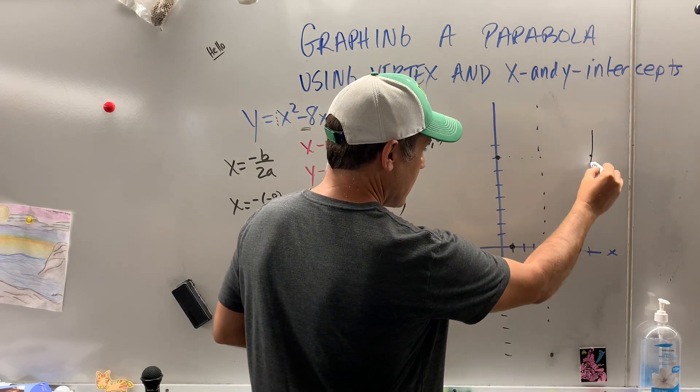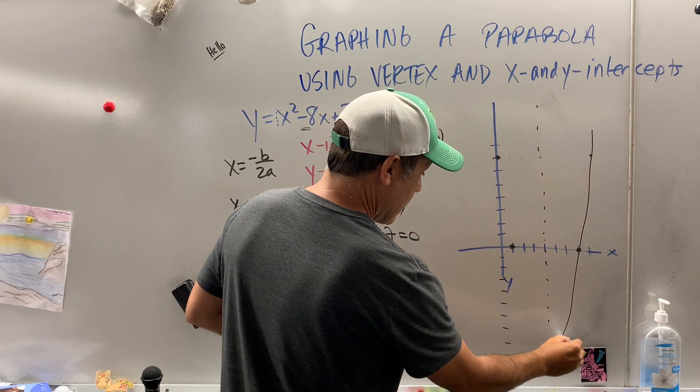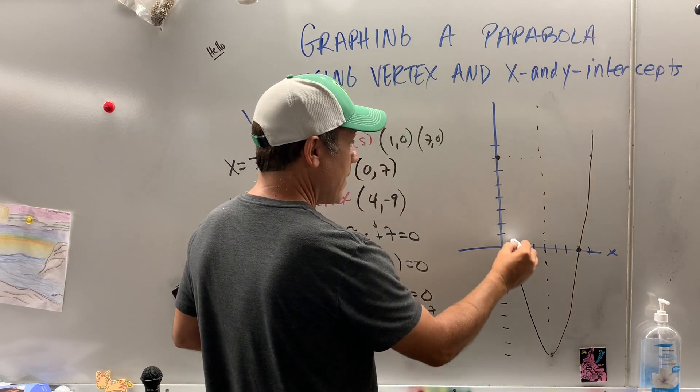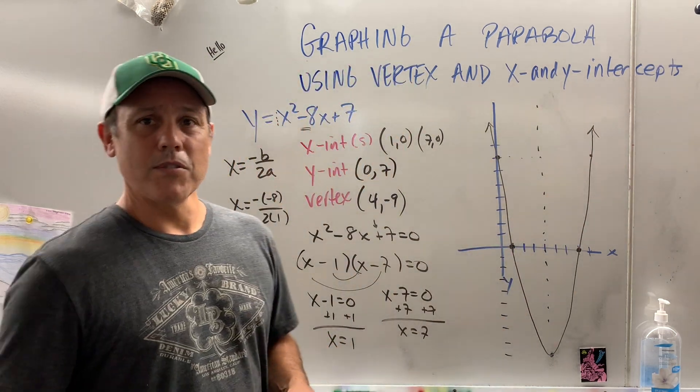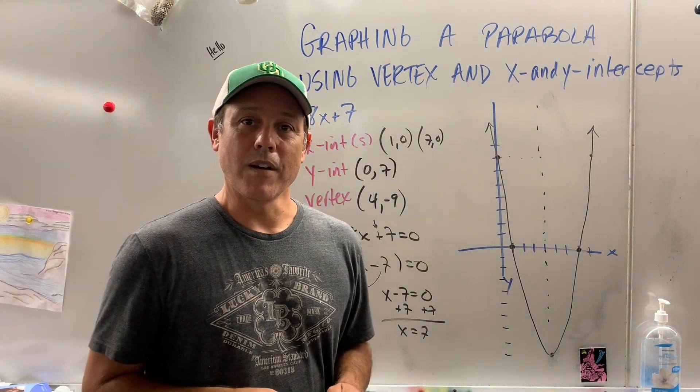And now you can play connected dots. Remember, there's a little curve there, and arrows, and that is how you graph a parabola using the vertex and x and y intercepts.